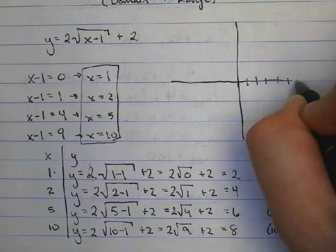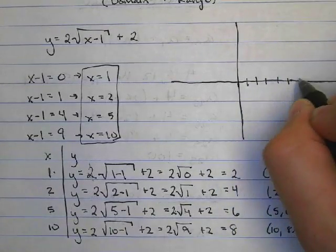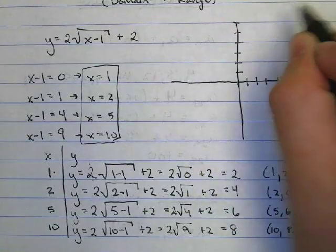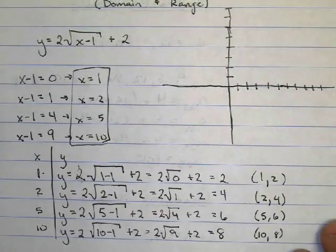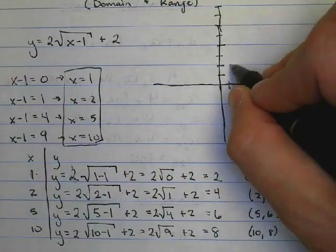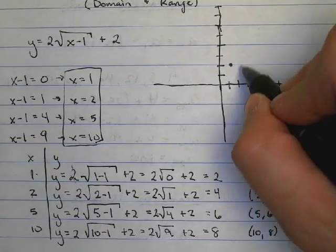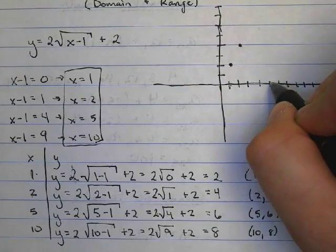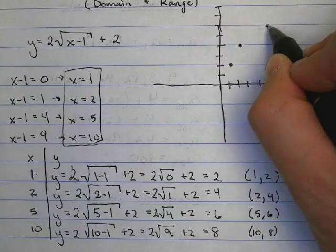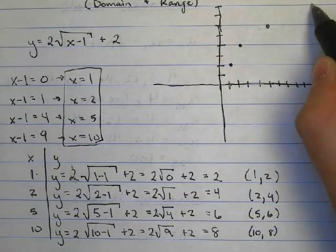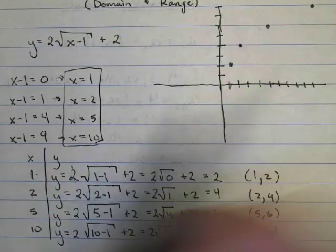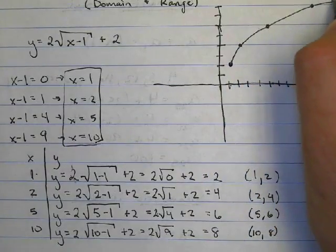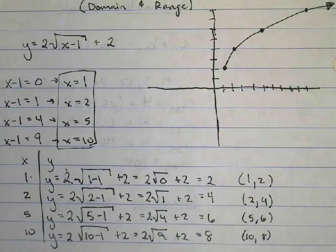Go ahead and plot these points. We'll go to (1, 2), then (2, 4), then (5, 6), and out to (10, 8). The curve starts at (1, 2) and then goes on forever in the positive direction. We only have an arrow on that one end. That's how we graph it.